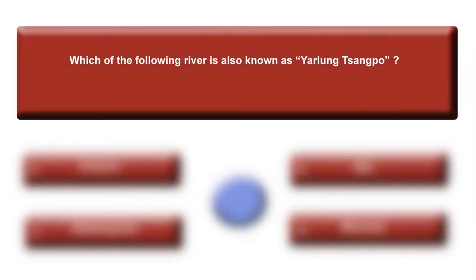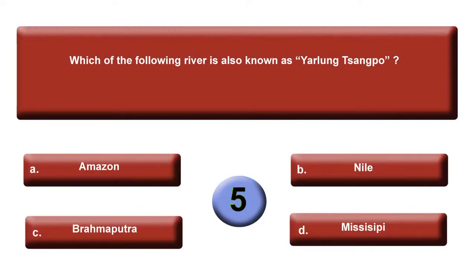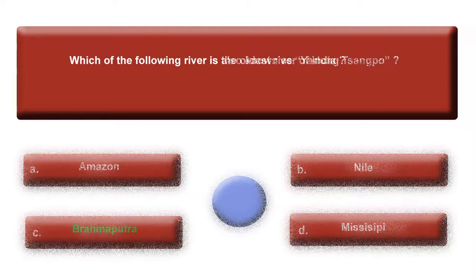Your next question is: Which of the following river is also known as Yarlang Sangpo? Your options are: option A, Amazon; option B, Nile; option C, Brahmaputra; or option D, Mississippi. Let's see what is the answer. Answer is C, Brahmaputra.